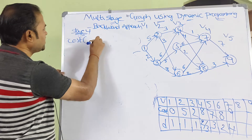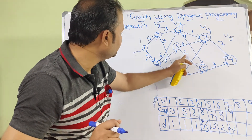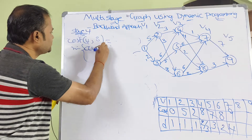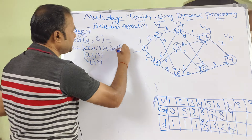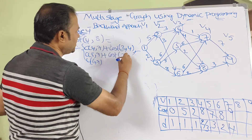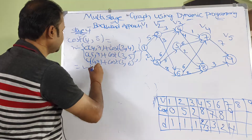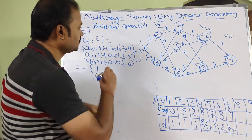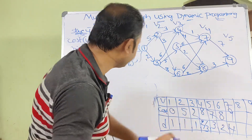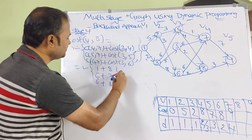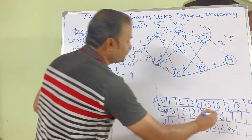Cost(4,8): vertex 8 has multiple incoming edges. Minimum of [C(4,8) + cost(3,4), C(5,8) + cost(3,5), C(6,8) + cost(3,6)]. Edge costs: C(4,8)=1, C(5,8)=6, C(6,8)=6 (same as for vertex 7). So: 1+8=9, 6+7=13, 6+8=14. Minimum is also 9, so cost(4,8) = 9 and D = 4.